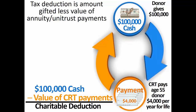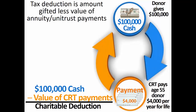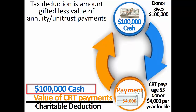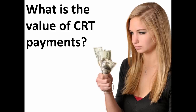Consider a simple example: a donor gives $100,000 of cash to his charitable remainder trust and in exchange receives the right to collect $4,000 per year for life. The charitable income tax deduction is the amount gifted less the value of the annuity payments. The same concept applies if the donor receives a fixed percentage payment of, say, 5% of trust assets per year. The only difference between the charitable remainder annuity trust and the charitable remainder unitrust is the calculation process for valuing the payments.